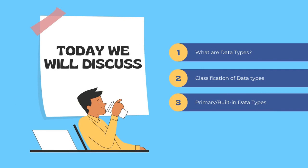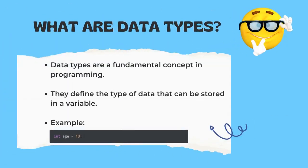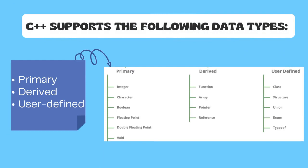Let's see what are data types. Basically, data types are the fundamental concepts in programming. They define what type of data can be stored in a variable. For example, I created a variable 'h' and assigned it a data type called int. Int means it can store an integer value.